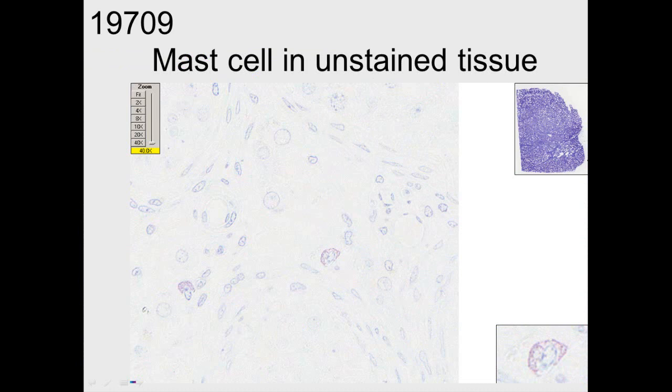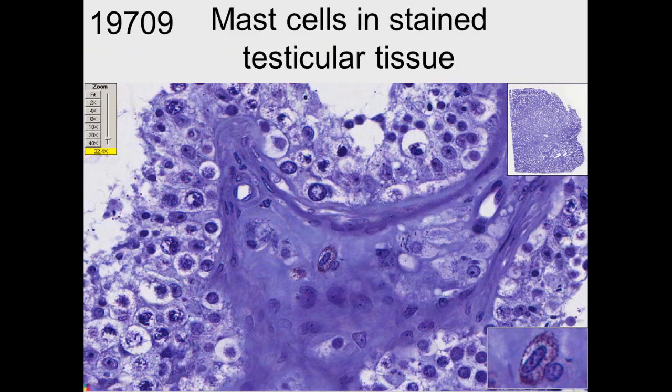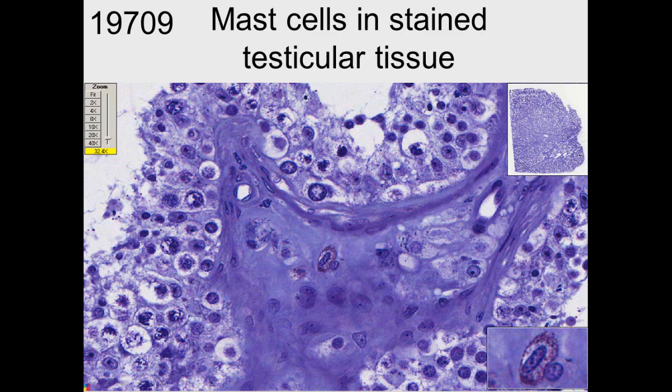Now sometimes when you look at unstained tissue, you can see that there are some cells that are stained. Here we can see some mast cells, the granules. With staining, you can see the granules even better. So we have tubules on the outside, interstitium in between. Again, mast cells in the interstitium that we see.